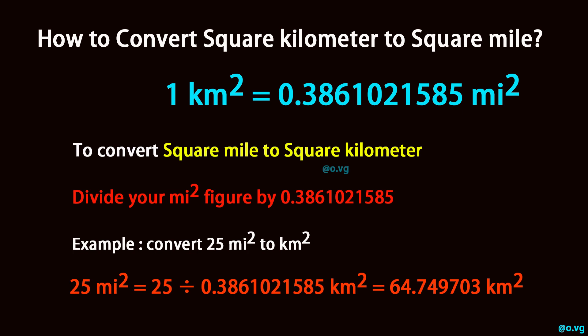Example: convert 25 square miles to square kilometers. 25 square miles equals 25 divided by 0.3861021585 square kilometer, which equals 64.749703 square kilometers.